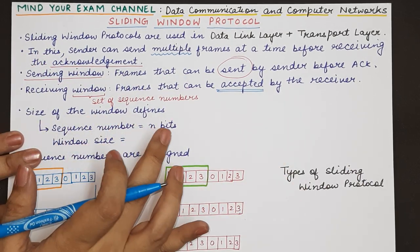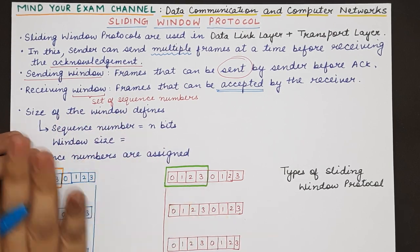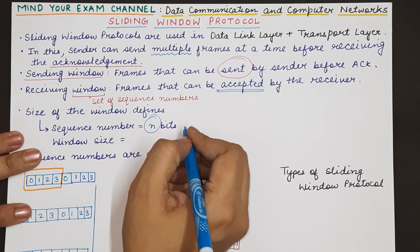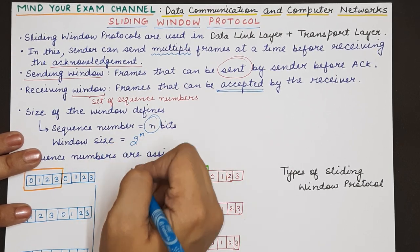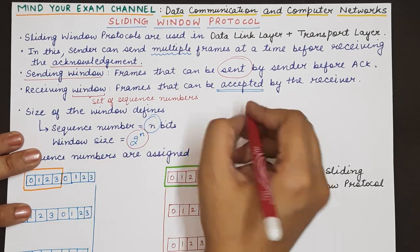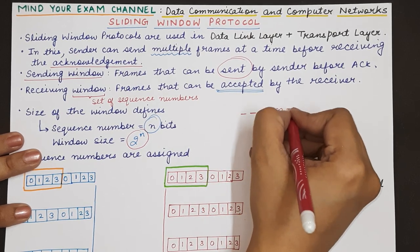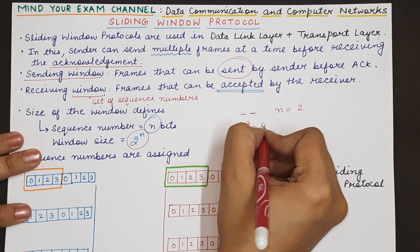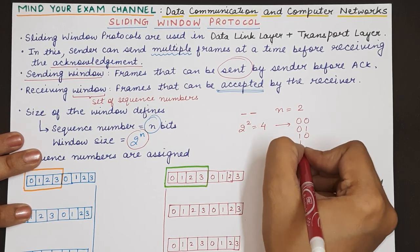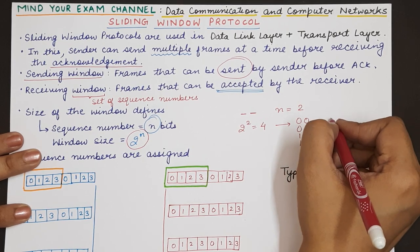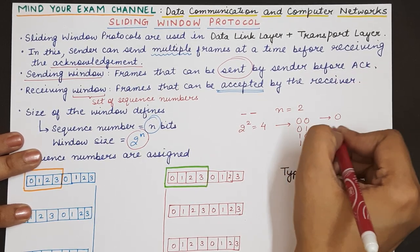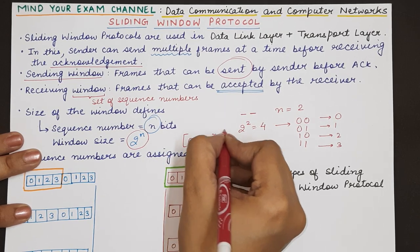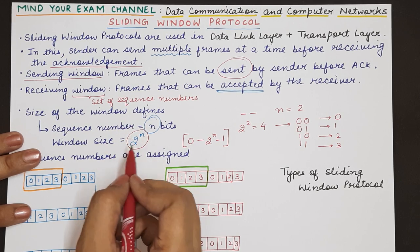The size of the window at both ends is determined by the sequence numbers. If there are n-bit sequence numbers, then the maximum size of the window will be 2 raised to the power n. For example, with 2-bit sequence numbers, n equals 2, and the total possible combinations are 2 raised to power 2, which is 4 — those combinations being 00, 01, 10, and 11. So the unique frame numbers are 0, 1, 2, and 3. Frame numbers go from 0 to 2^n minus 1, and the total window size is 2^n.